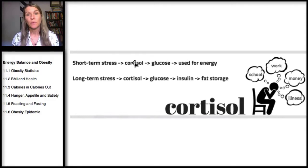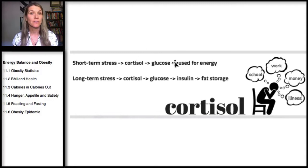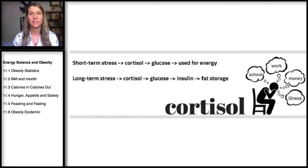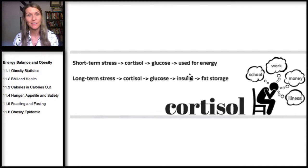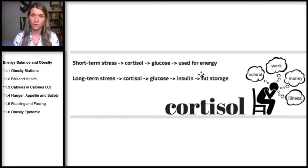Acute stress triggers the release of glucose, which gives us some quick energy. Chronic stress is that low-grade stress from school, family, work, etc. This also results in a cortisol release, but it's continuous — there's a constant release of glucose and insulin, and remember, insulin stimulates fat creation and fat storage.